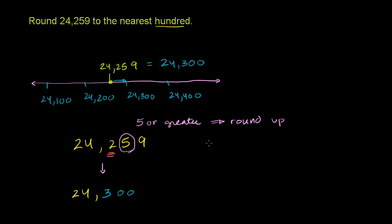And just as a kind of a counter example, if I had 24,249, and I wanted to round to the nearest hundred, I would say, OK, I want to round to the nearest hundred. Let me look at the tens place, this place one level to the right.